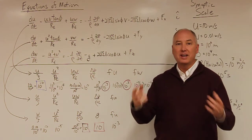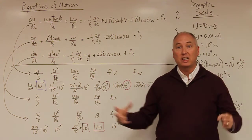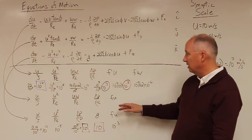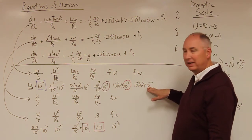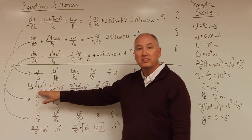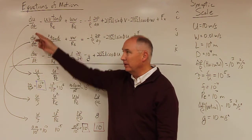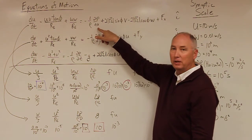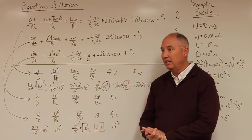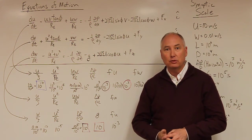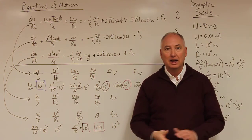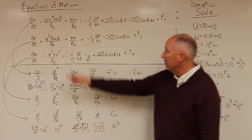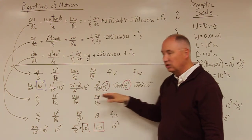If you want to get to 99% of what's going on in the atmosphere, you need a second-order approximation. Moving one order smaller brings us to 10 to the minus 4th, which corresponds to the acceleration term du/dt. Adding that in gives a three-term equation: du/dt = -1/ρ · ∂p/∂x + fv. That is a prognostic equation — it contains time, so you can integrate it forward to get the evolution of the system. This is much simpler than retaining all other residual terms, which are orders of magnitude smaller.